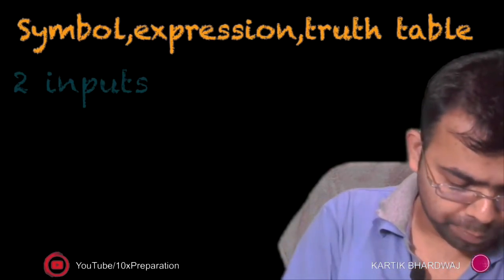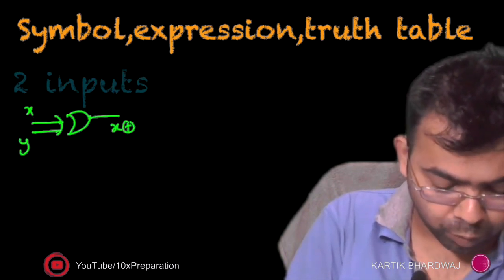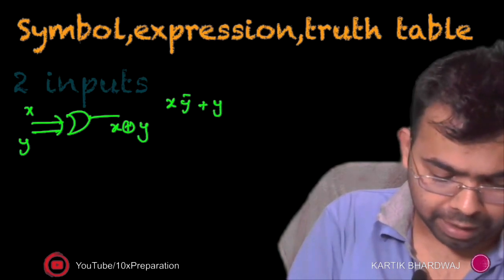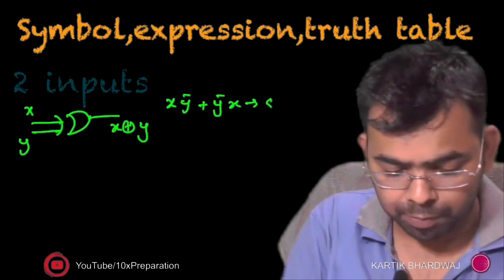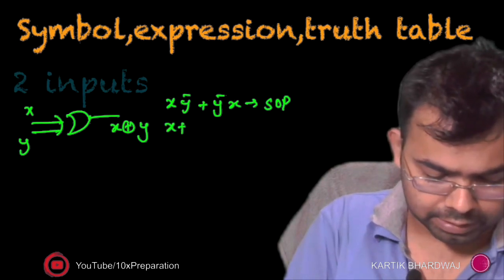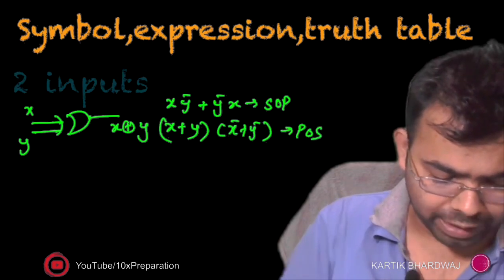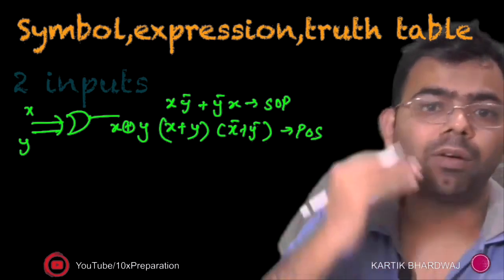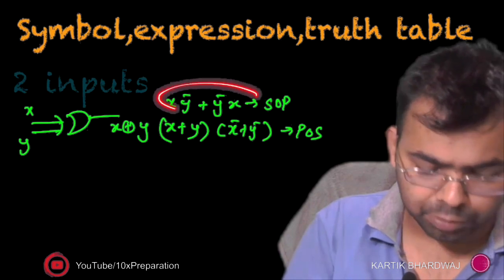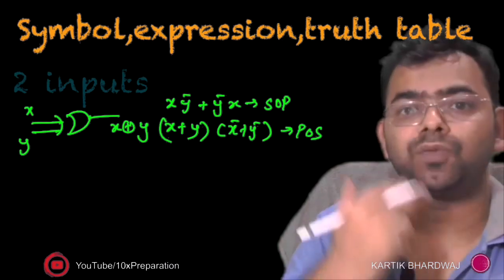So for two inputs — X and Y — the XOR gate can be written as X XOR Y. How do you get this? This is X·Y-bar plus Y·X-bar. This is simply the SOP (sum of products) form. The other form is (X + Y)·(X-bar + Y-bar), which is the POS form. So you can write the XOR gate in SOP form and POS form, or in terms of minterms and maxterms. This is the expression for two inputs.